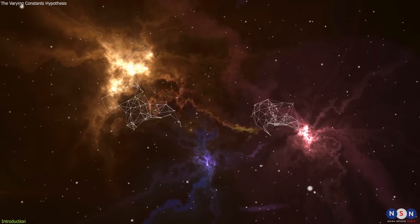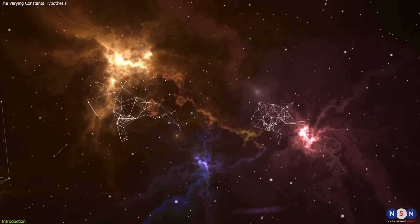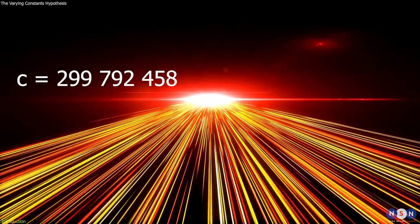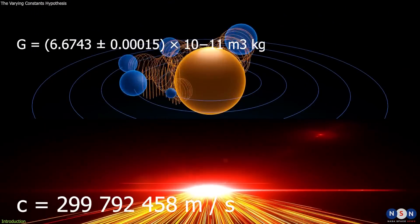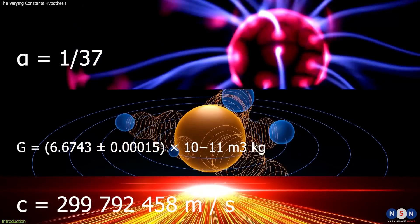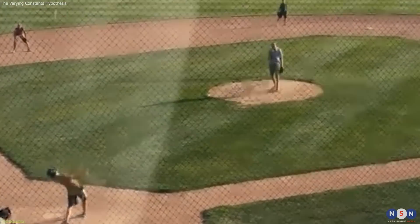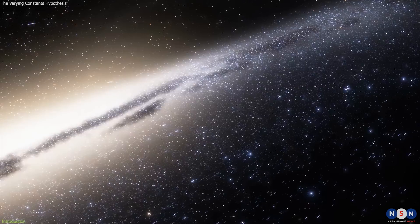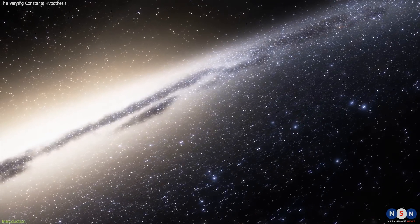But what if some of the most fundamental things we know about the universe are not really constant? What if the speed of light, the gravitational constant, or the fine structure constant could change over time or space? How would that affect our understanding of reality and our place in it? That's the question we're going to explore in this video.